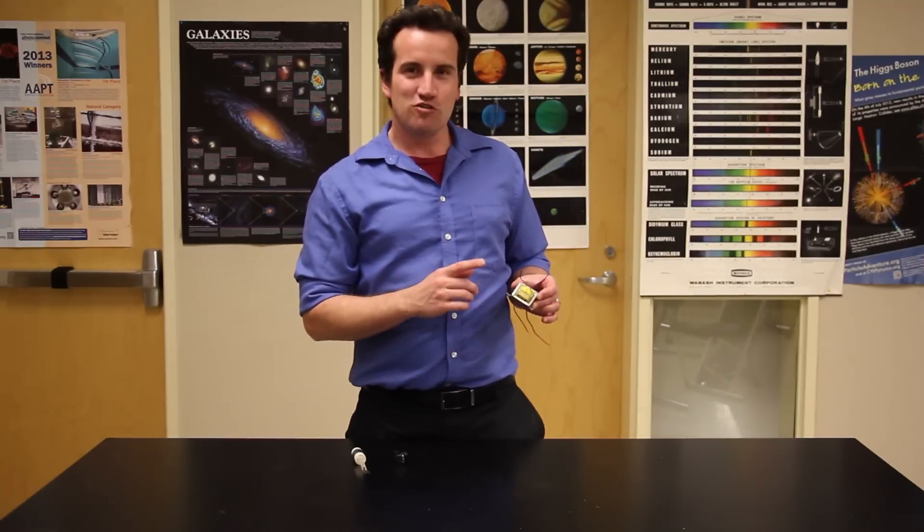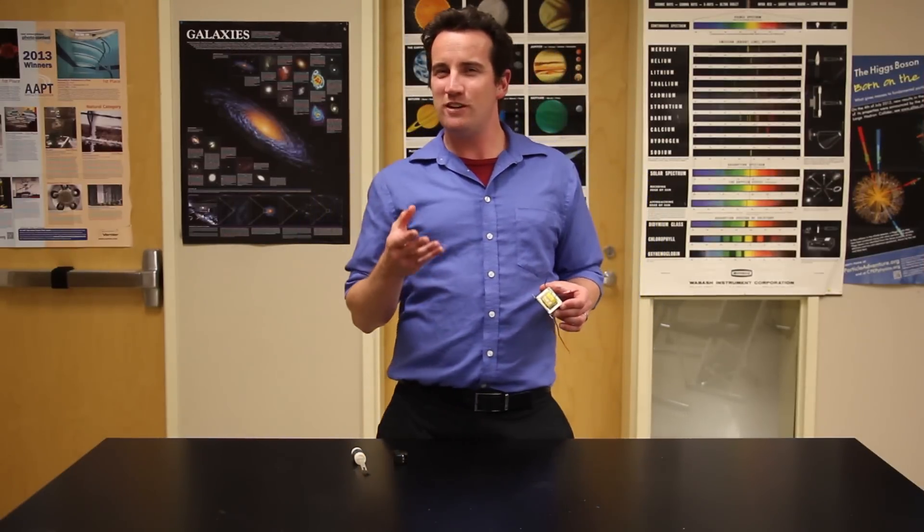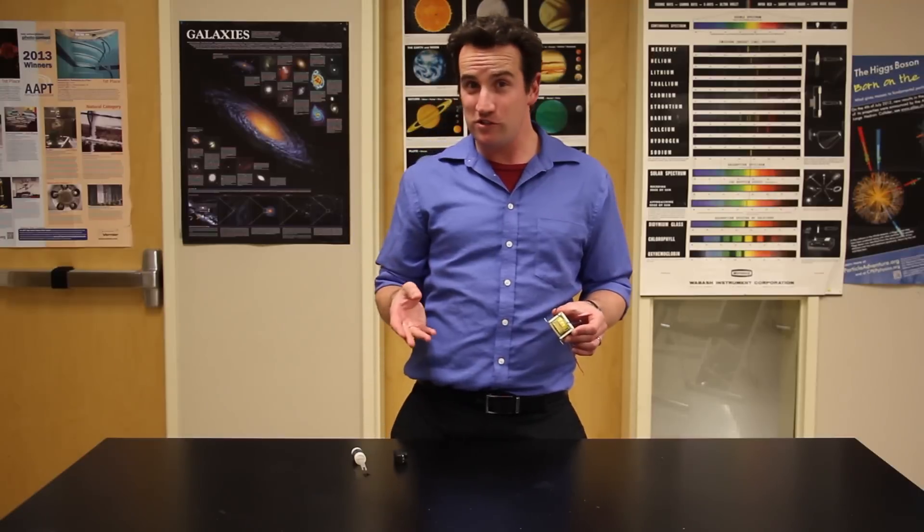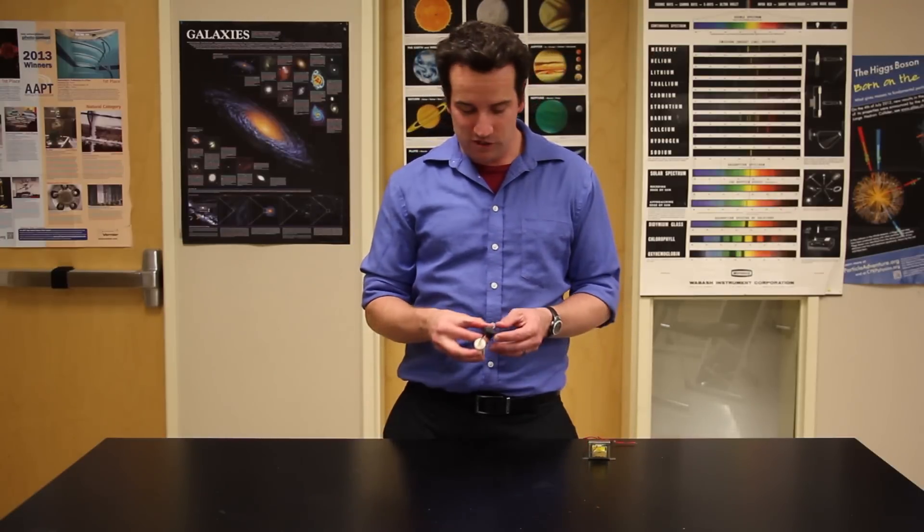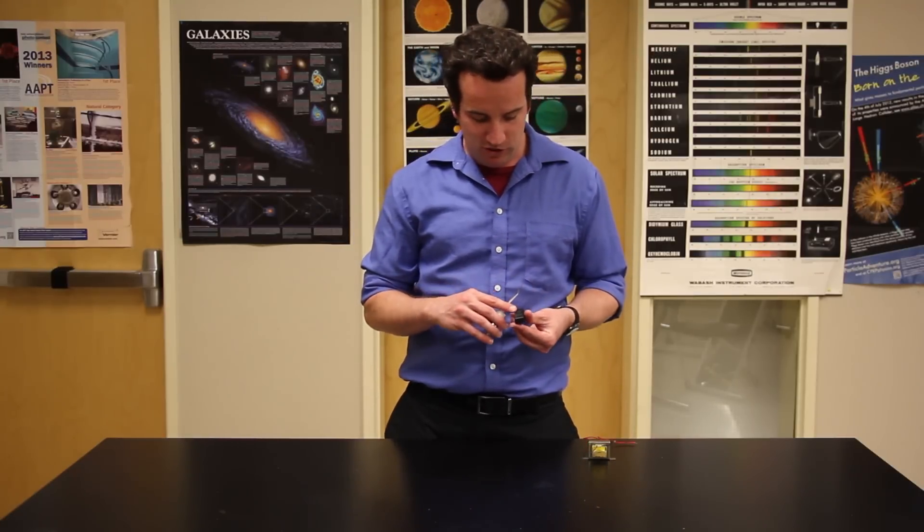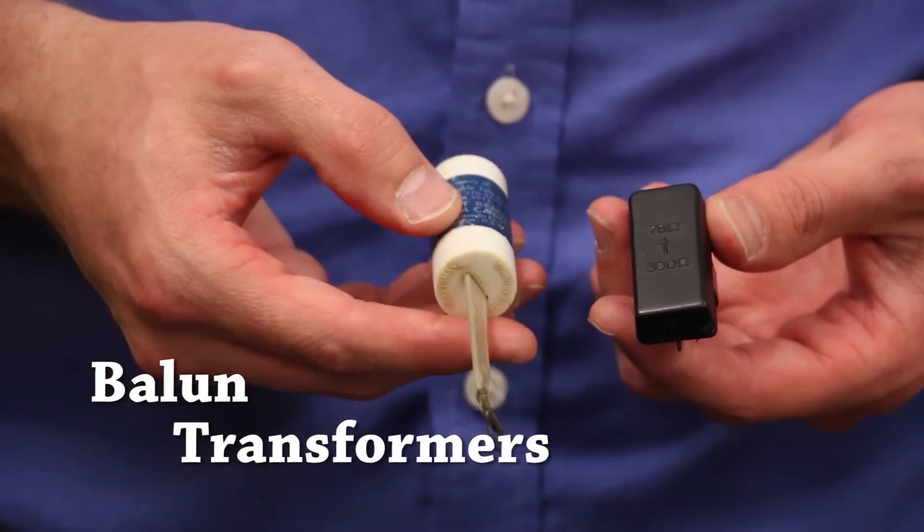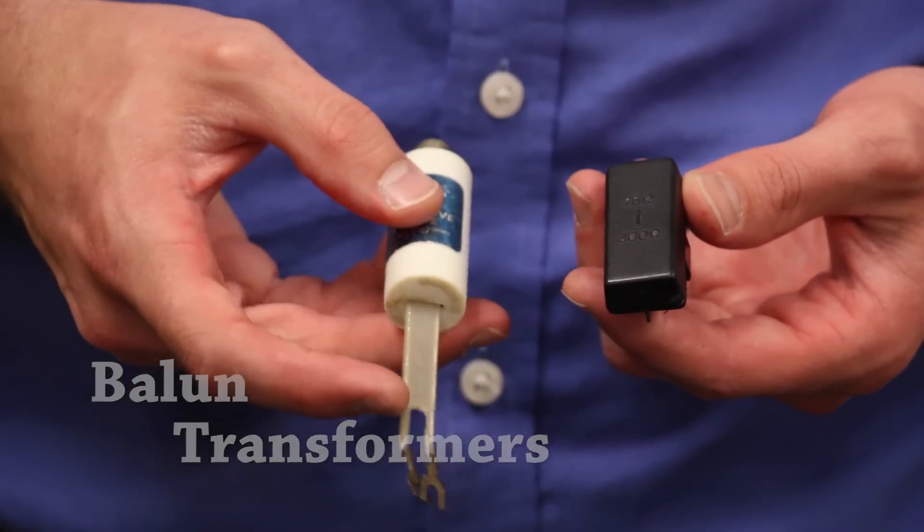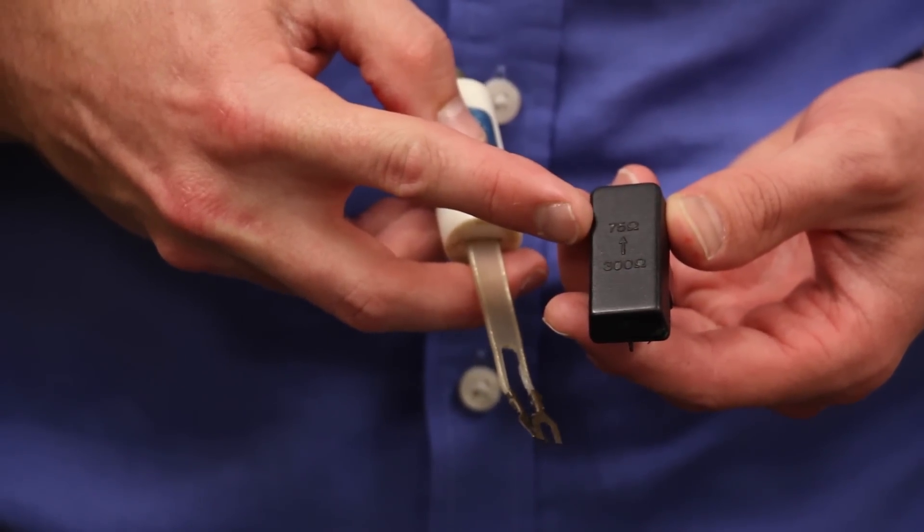One more thing. Since transformers have to match impedances in order to work, it would make sense that you would have different transformer constructions for different frequencies. These are high-frequency transformers for television application. These are Ballen transformers that are used to match the impedance of the 300-ohm flat TV lead to the 75-ohm impedance of the coaxial cable lead.